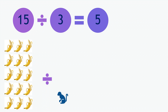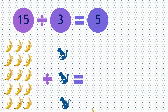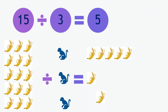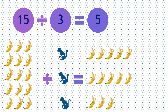If you divide them by 3 monkeys, each monkey will receive 5 bananas: 1, 2, 3, 4, 5 — next monkey: 1, 2, 3, 4, 5 — next monkey: 1, 2, 3, 4, 5.